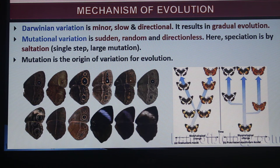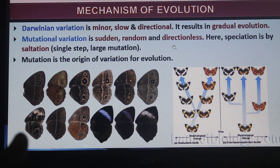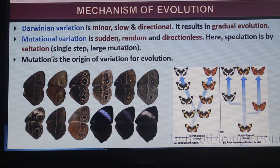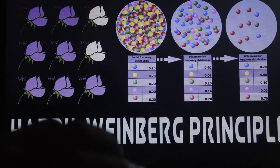Darwin's variations are minor, slow, and directional, resulting in gradual evolution. Mutational variations are sudden, random, and directionless changes. A single large mutation is called saltation. Mutation is the origin of variation and evolution.